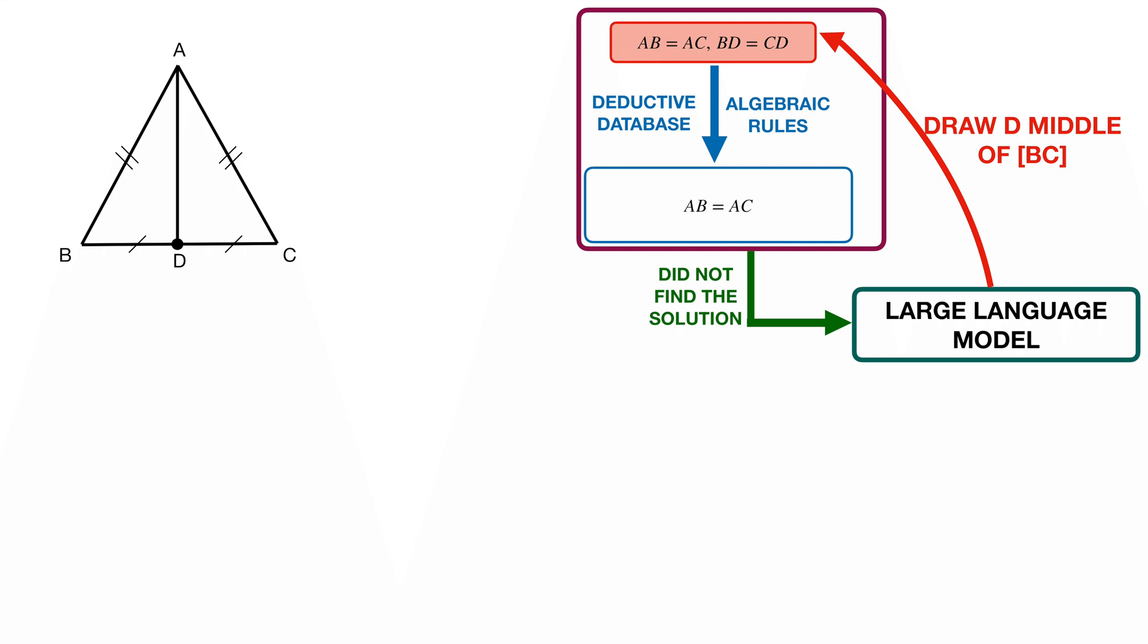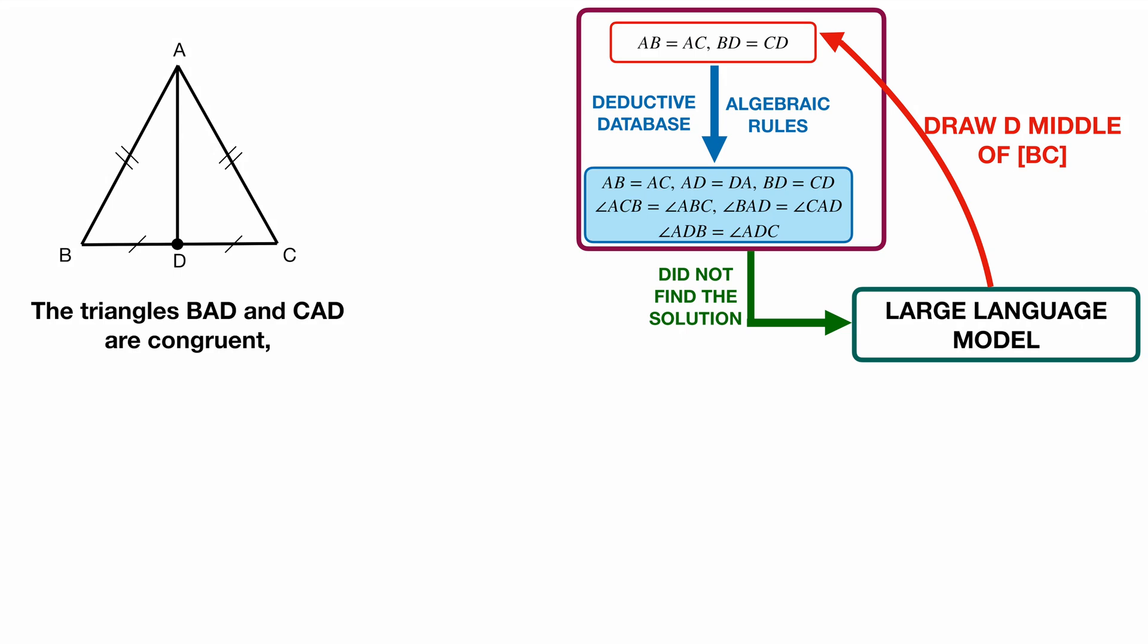That will become a new hypothesis BD is equal to CD in the red box and then AlphaGeometry will run again the symbolic machine on the new set of hypotheses. It will then make various deductions and finally reach the desired conclusion. Now the only question left is how does the large language model work? This is based on a deep learning architecture called a transformer which is omnipresent nowadays and not specific to this problem, so instead I will focus on how to train the model such that it can generate auxiliary constructions.